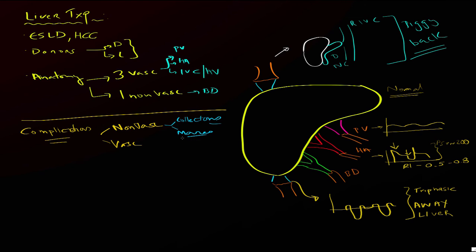In terms of masses, the key entity to know about is PTLD — post-transplant lymphoproliferative disorder. It's seen uniquely in transplant patients: it's a proliferation driven by Epstein-Barr virus that causes a lymphoproliferative disorder manifesting like lymphoma within these organs. It can appear as a single mass, multiple masses, a very infiltrative mass, or a mass in the region of the porta hepatis. These need to be biopsied to determine the exact stage of PTLD so it can be appropriately treated.